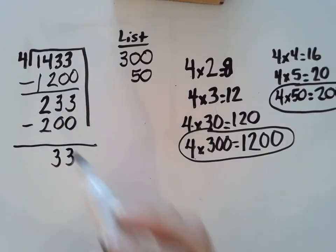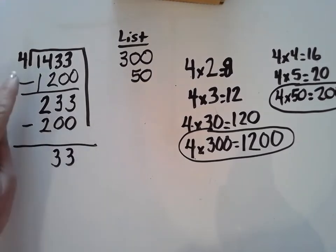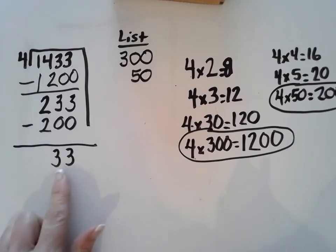Because remember, we want to try to get an answer that's either 0 or less than 4. It can't be above 4. Like, 33 is greater than 4. So I have to keep dividing.